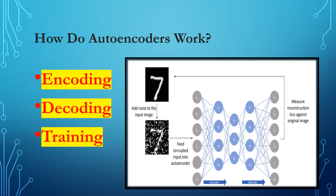There are different types of autoencoders, but the core idea remains the same: learning a compact representation of input data through encoding and decoding processes. Autoencoders are widely used in various applications such as image compression, anomaly detection, dimensionality reduction, and generative models.